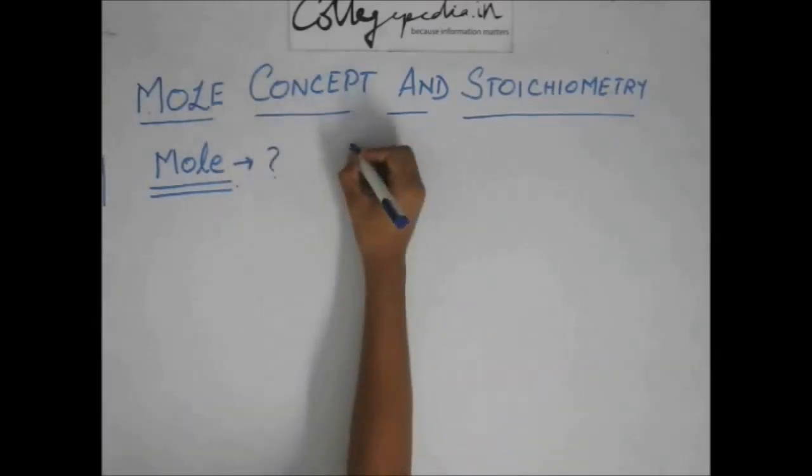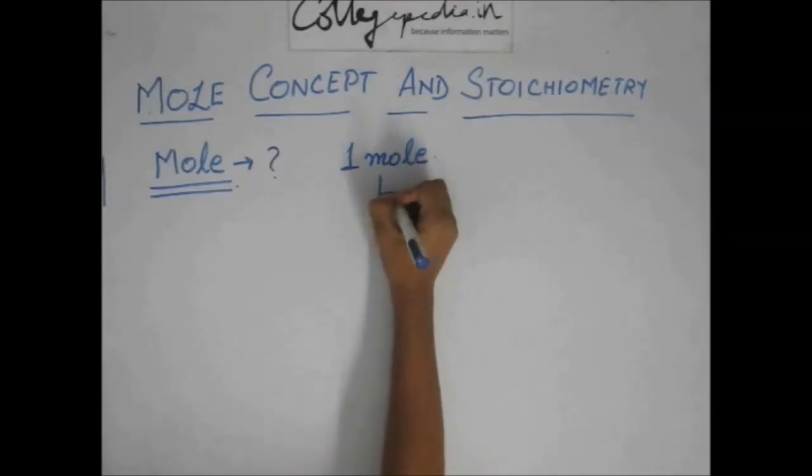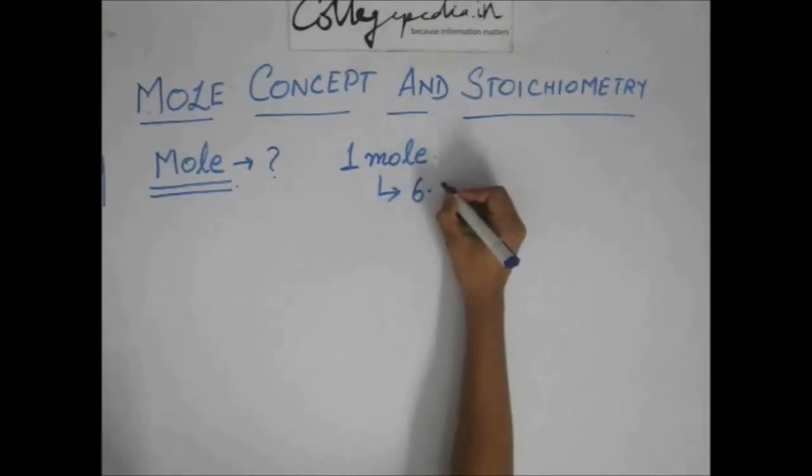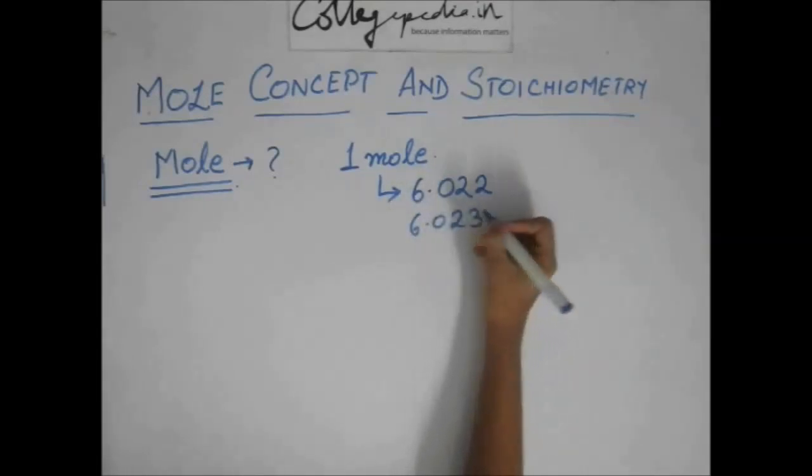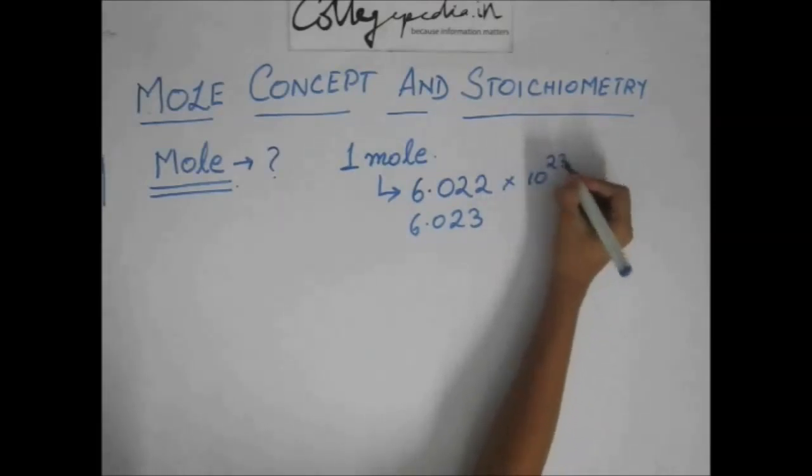One mole is nothing but a number. It is just a number whose value is 6.022 or 6.023. You can use anything, it doesn't make much of a difference, into 10 to the power 23.